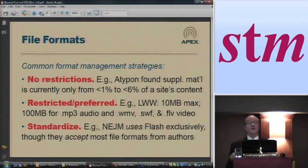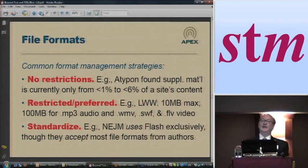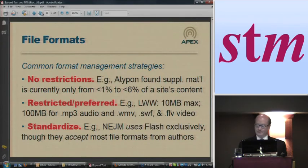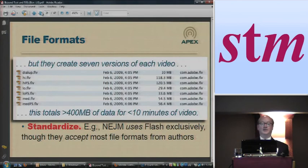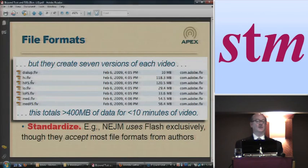The last option is super standardization. New England Journal uses only Flash — all the videos and animations you see on New England Journal of Medicine are Flash. They actually just convert everything the authors send to Flash video, so they accept a wide variety of formats but only publish the Flash. But they still create seven video files for every video because they've got a whole range of resolutions: dial-up, two low resolutions, two medium resolutions, and two high resolutions. So you've got seven files for identical video, which amounts to over 400 megabytes of data for probably less than 10 minutes of video.